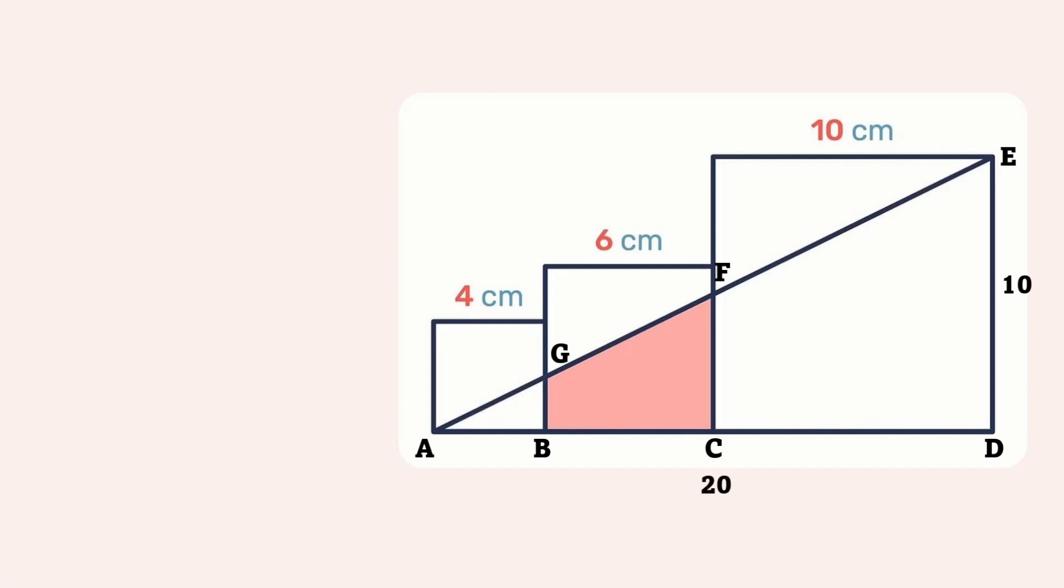Now when we look at these triangles, we can see there are right angles at D, C, and B. Also, because the lines BG, CF, and DE are parallel, the angles at G, F, and E are also congruent. In particular, all three triangles also happen to share the same angle A.